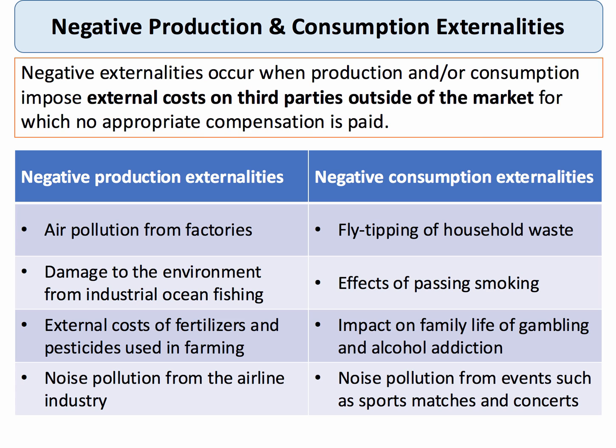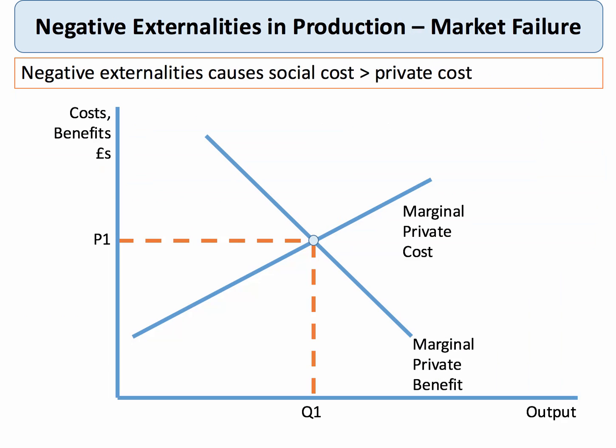Externalities create spillover costs. So how do we show this diagrammatically? What's the analysis for seeing how this leads to market failure? The key thing is to make a distinction between the private costs and benefits to the individual consumer and producer, and the social costs and benefits to society as a whole.